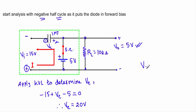So when the diode is in the negative half cycle, the output voltage is 5 volts, and the negative half cycle charges the capacitor to a stored voltage of 20 volts.